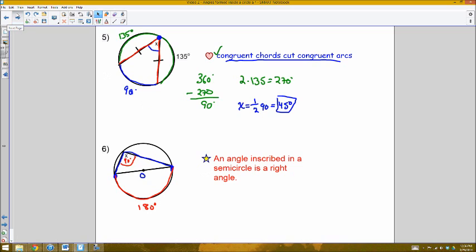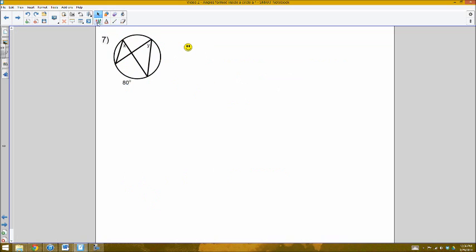One more observation we could make is that, say I have two angles inscribed within the same arc. Here I have an arc of 80 degrees. Angle Y is inscribed within that 80, meaning that angle Y would have to be 40 degrees. Angle X is inscribed within that exact same arc of 80 degrees, meaning that X would have to be half that, which is 40 as well.